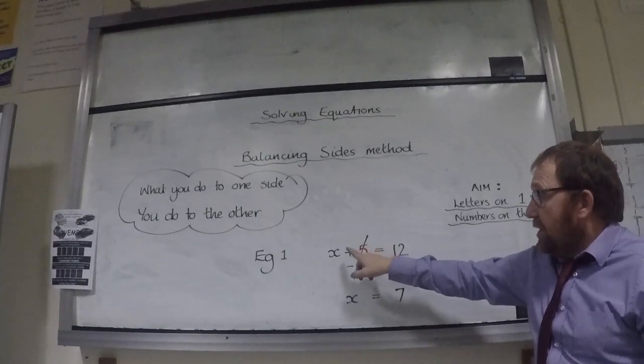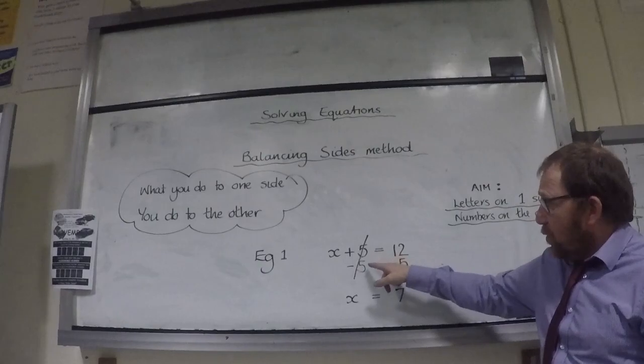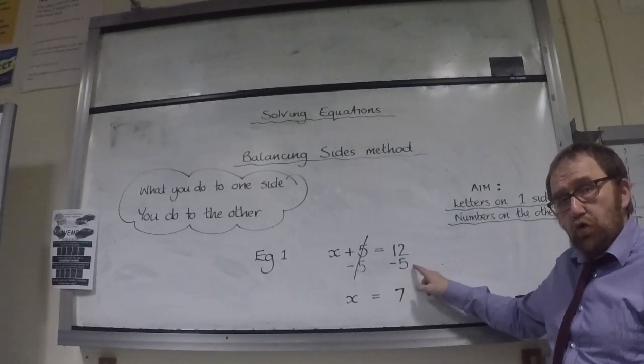We have x plus 5 equals 12. To get rid of the plus 5 and leave the x, we subtract 5. What you do to one side, you must do to the other.